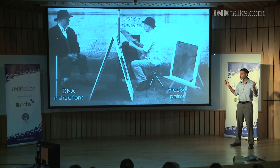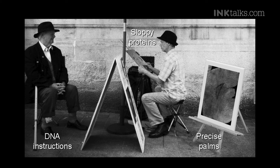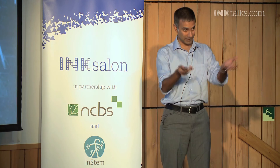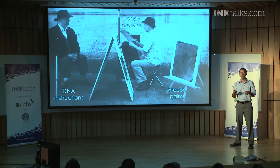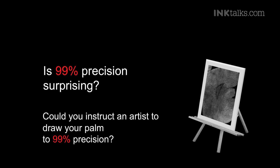But what you get as the outcome is the palm. Now if you saw somebody doing this on the street and you saw this picture coming out, you would stop and say, how are you doing that? And you would ask the subject: what language are you using? How are you saying this? The fact is, although we have sequenced thousands of genomes and are going to be sequencing millions, we don't actually know the language in which the genomes are written. We don't know the language in which the instructions are being given. We know some of it and we are learning much more. So again, is 99% precision surprising? Could you instruct a street artist to draw your palm to 99% precision just by using English words? Think about this and you realize how amazing it is that biology manages to achieve it.